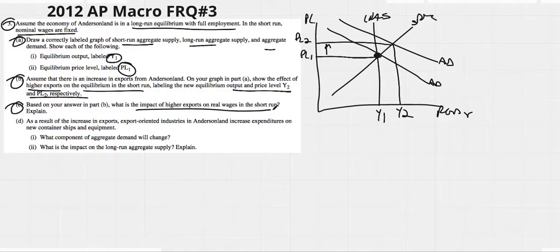Based on your answer in part B, what is the impact of higher exports on real wages in the short run? Understand that anytime price levels go up, real wages have to go down. Your real wage is your amount of purchasing power, what you can actually put in your grocery cart. So if your price level goes up, less groceries go into your cart. Your purchasing power would go down, and we would explain it just that way. Real wages would fall as your purchasing power has decreased.